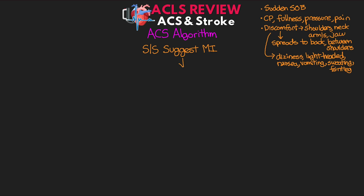To start off, there are three things that need to be done immediately. We need to get a 12-lead ECG, obtain a set of vitals, and be prepared for CPR and defibrillation if needed — so get your code cart ready, and it probably isn't going to hurt to throw some pads on your patient. Based on our vitals, if O2 sats are less than 90, we want to start oxygen at 4 liters and titrate as necessary. The third thing is to give the following medications: aspirin 160–325 mg, nitroglycerin sublingual, and morphine IV if chest pain is not relieved by the nitro.